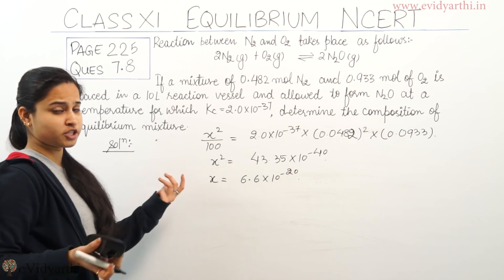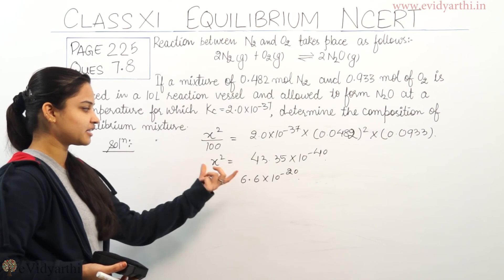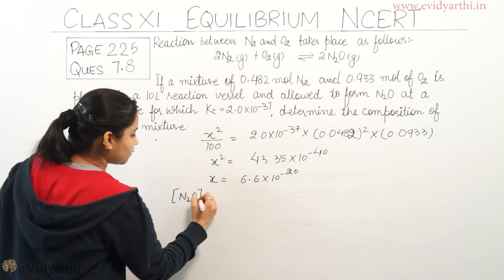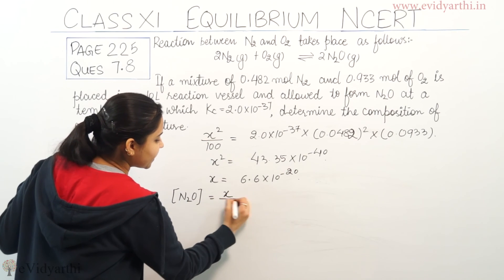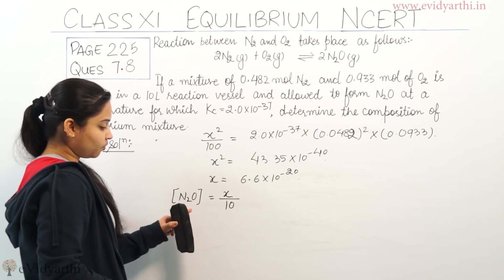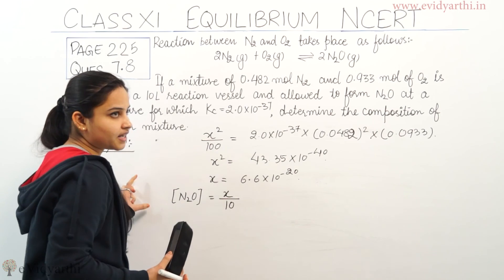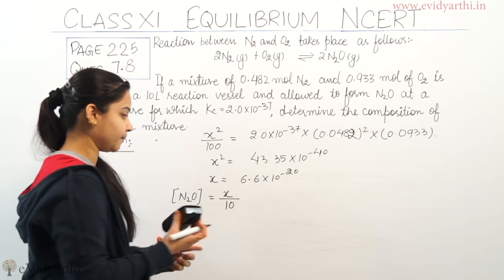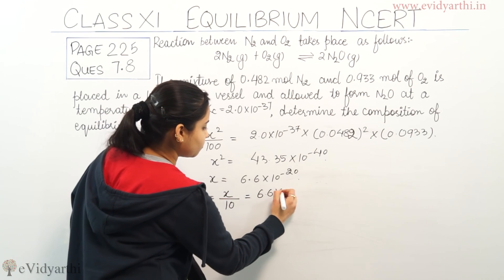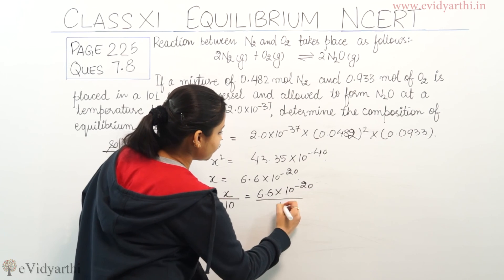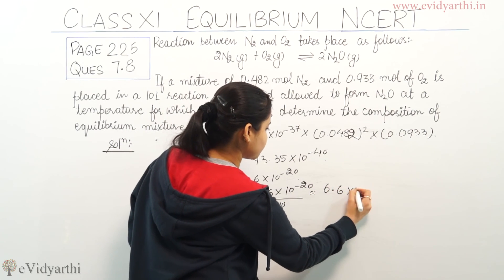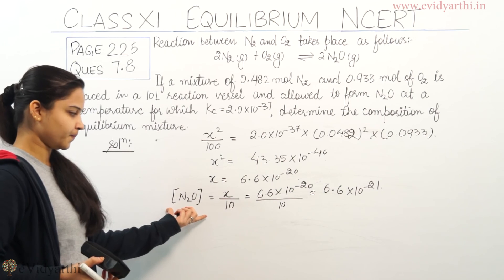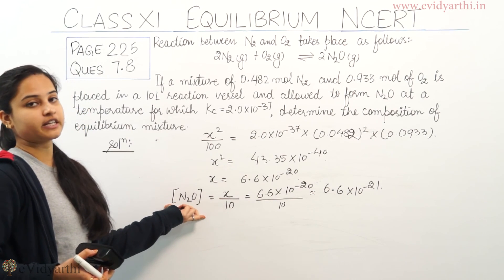The concentration of N₂O at equilibrium is X/10, which equals 6.6 × 10⁻²⁰ divided by 10, giving 6.6 × 10⁻²¹ mol/L. So this is the composition of the equilibrium mixture — the molar concentration of N₂O at equilibrium is 6.6 × 10⁻²¹ mol/L.